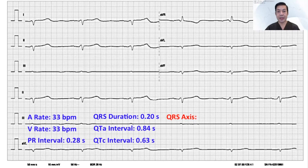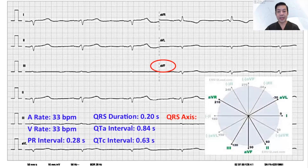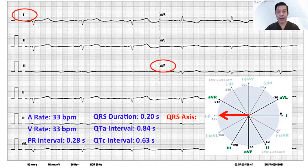Going to the QRS axis determination using the hexagonal system, we examine the limb leads and look for the lead where the QRS is most equiphasic. In this case, it is in lead AVF, where the amplitude of the R and the depth of the S are nearly equal. Looking at the axis, AVF is positive 90 degrees, and the leads running perpendicular to it would be lead 1 or its opposite. Examining lead 1, we can see it is predominantly negative, meaning the axis is going away from it — so the axis in this patient is positive 180 degrees.